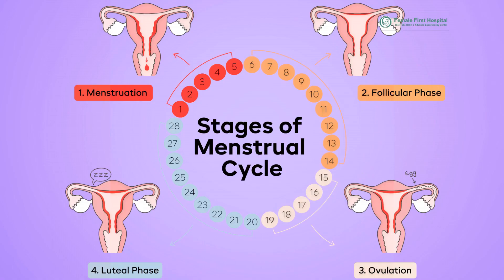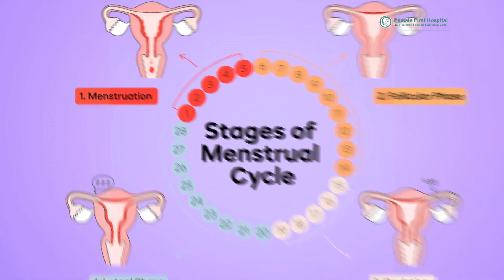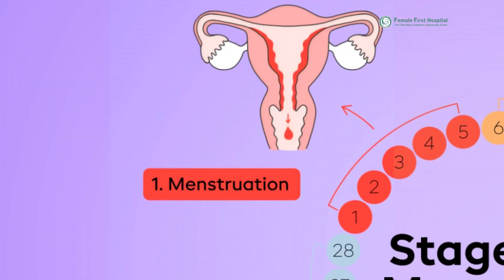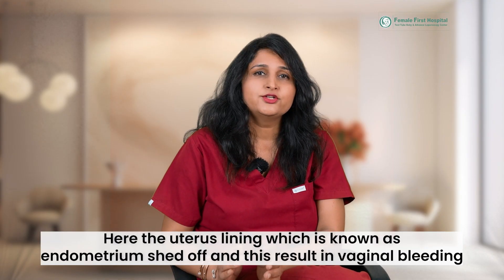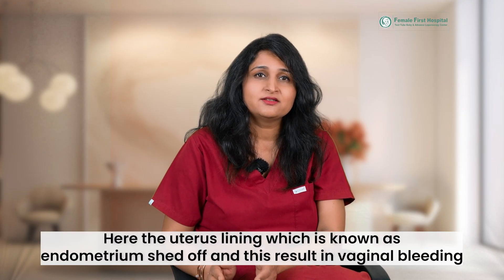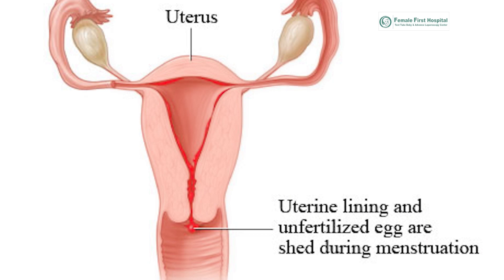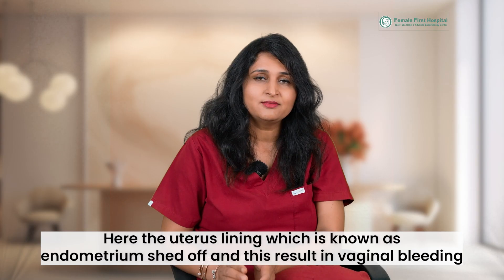The first is the menstrual phase, which lasts for days 1 to 5. The cycle begins with menstruation, where the uterus lining — known as the endometrium — sheds, resulting in vaginal bleeding that typically lasts for 3 to 7 days.